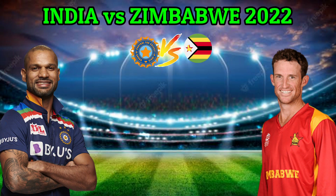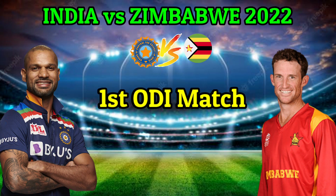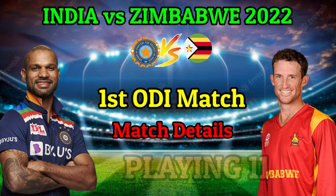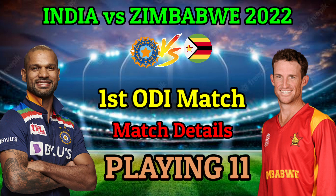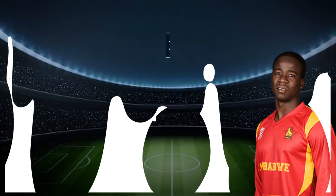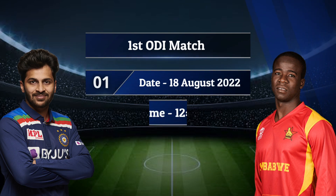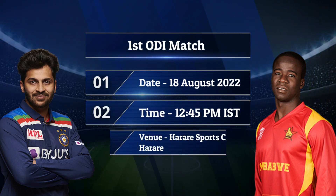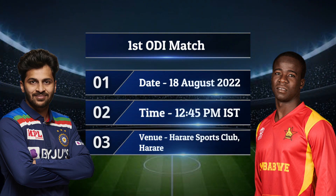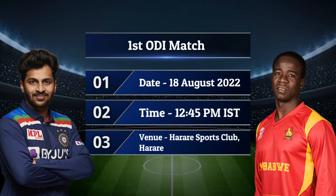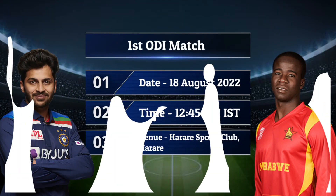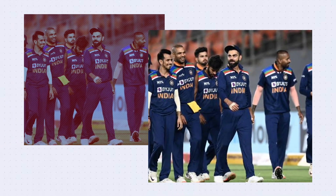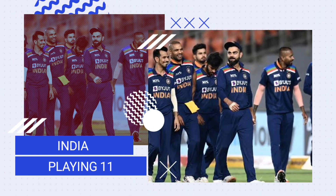India vs Zimbabwe First ODI Match details and final Playing 11. Date: 18 August 2022, Timing: 12:45 PM Indian Standard Time, Venue: Harare Sports Club, Harare. Team India Best Playing 11 vs Zimbabwe.